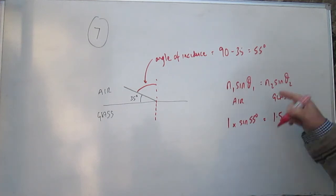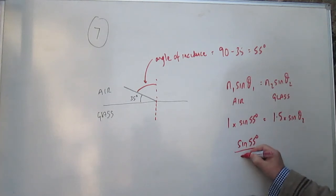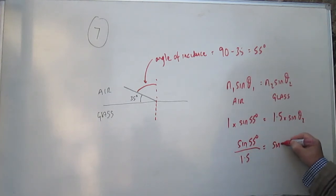And therefore, just by a trivial rearrangement, we get that sine 55 degrees divided by 1.5 is equal to sine theta 2. And you can trivially, therefore, work out that theta 2 is equal to 33.1 degrees.